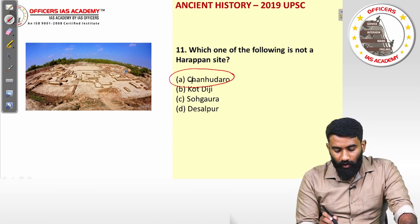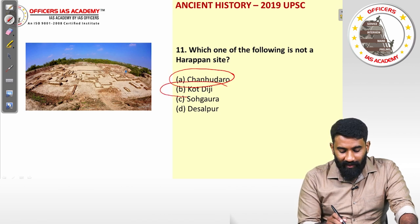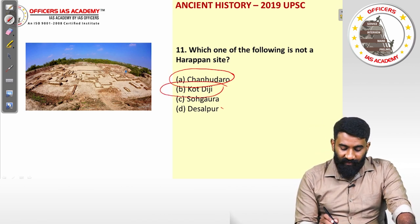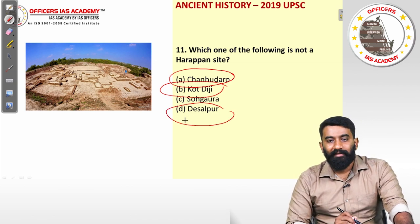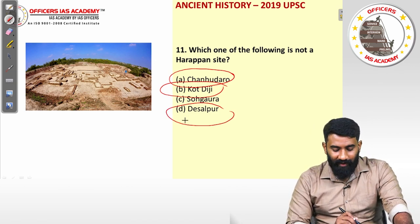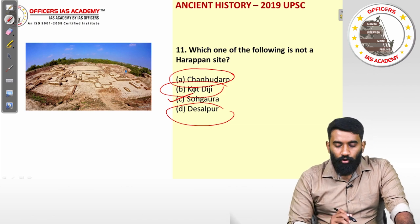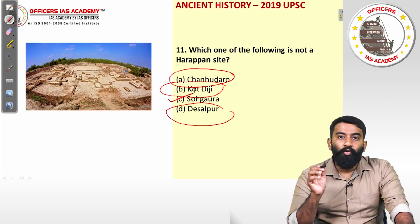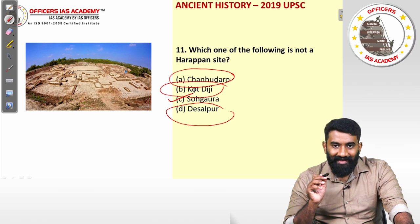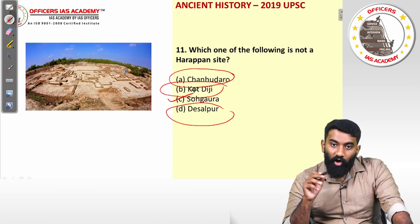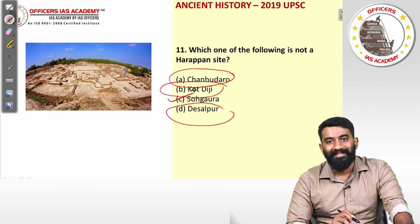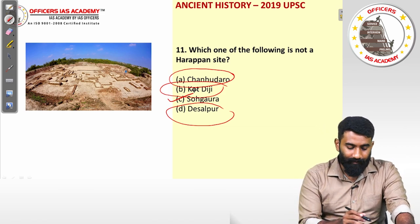Question eleven: which one of the following is not a Harappan site? Chanhu-daro in Pakistan is a Harappan site, Kot Diji in Pakistan is a Harappan site, Desalpur in Gujarat is a Harappan site. The answer is Shogoura — it is a Mauryan site, not a Harappan site. Shogoura is where we find copper plate inscriptions from the Mauryan period. The answer is option C.